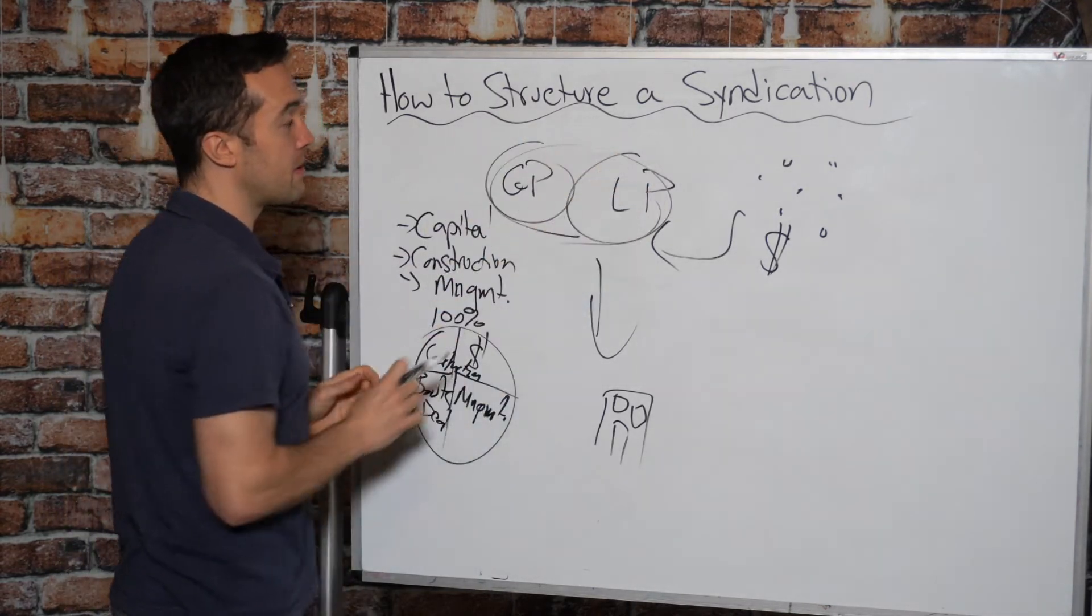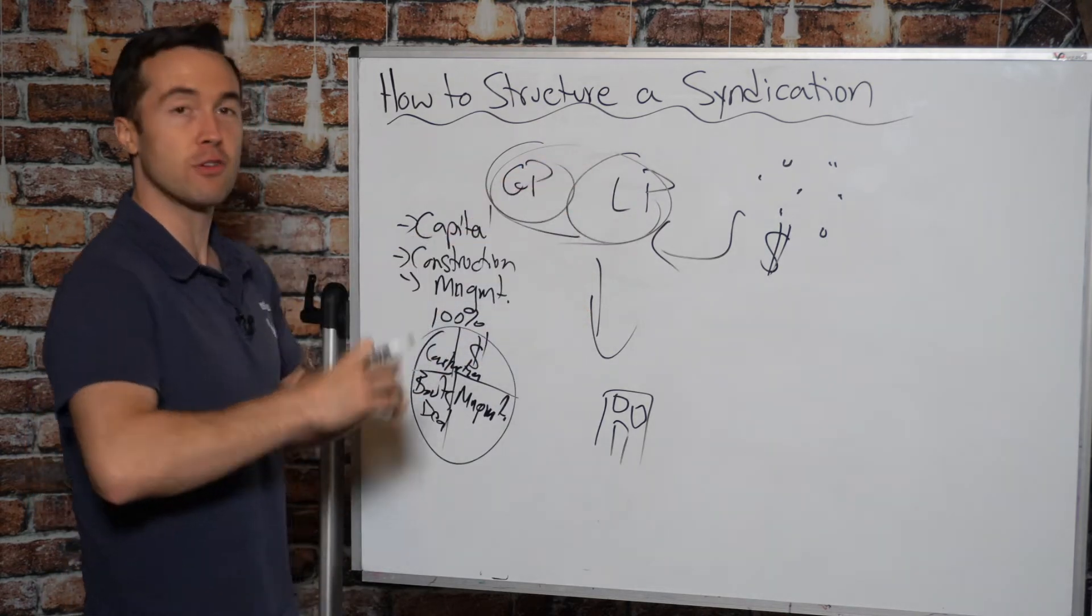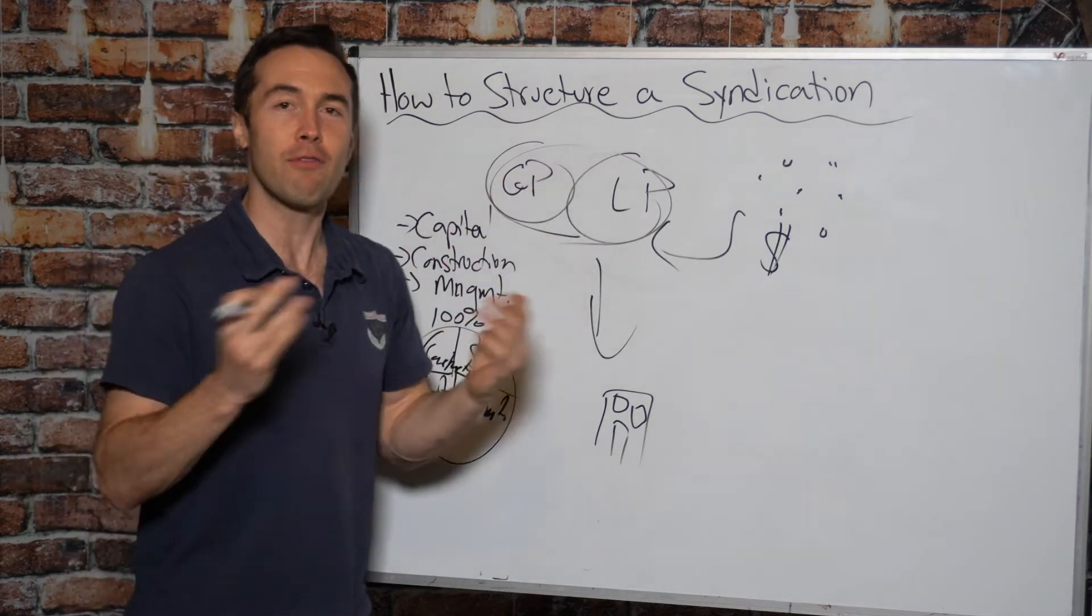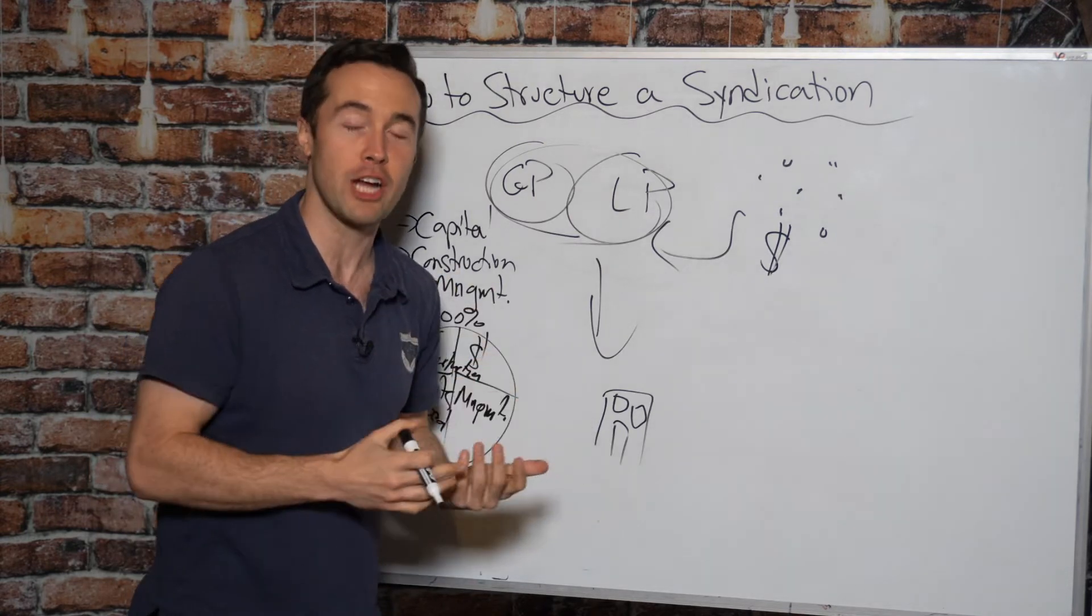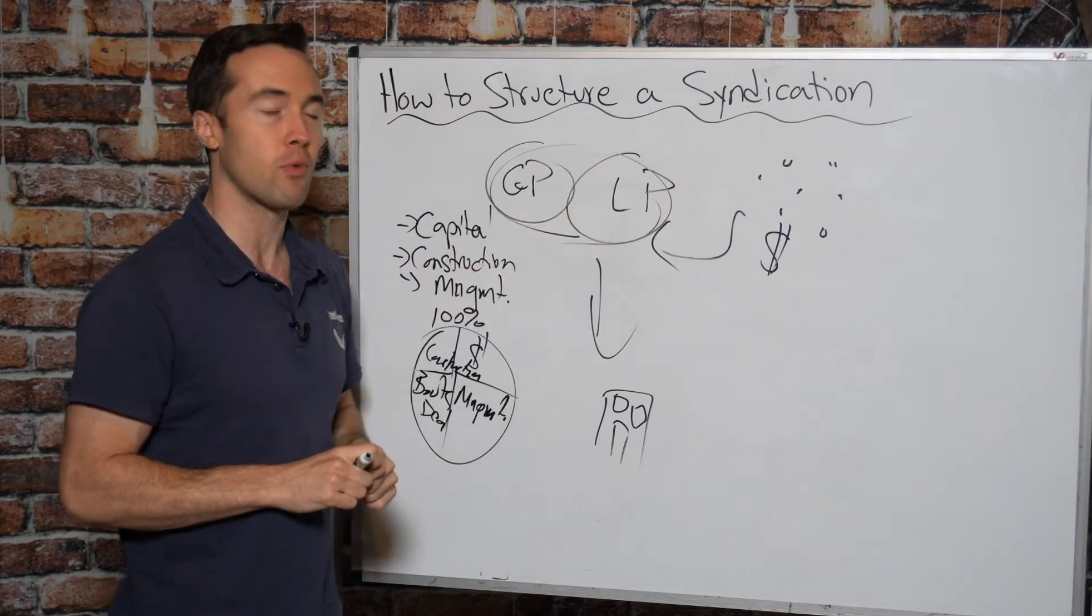Now let's move over to the limited partnership. How is the limited partnership divvied up? Let's say there's a hundred investors. Does every investor get one share? How is this all split?